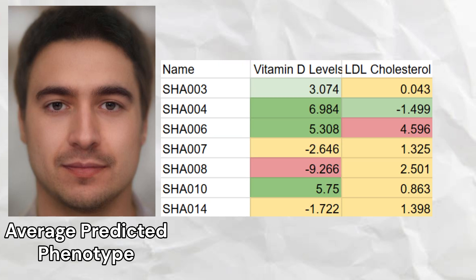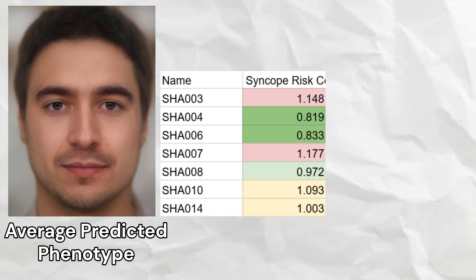Most samples had high vitamin D levels, which is good, and six out of seven samples had elevated levels of LDL cholesterol, which is bad for cardiovascular health. Three samples had lower than average risk of syncope, while four samples had elevated risk of syncope.